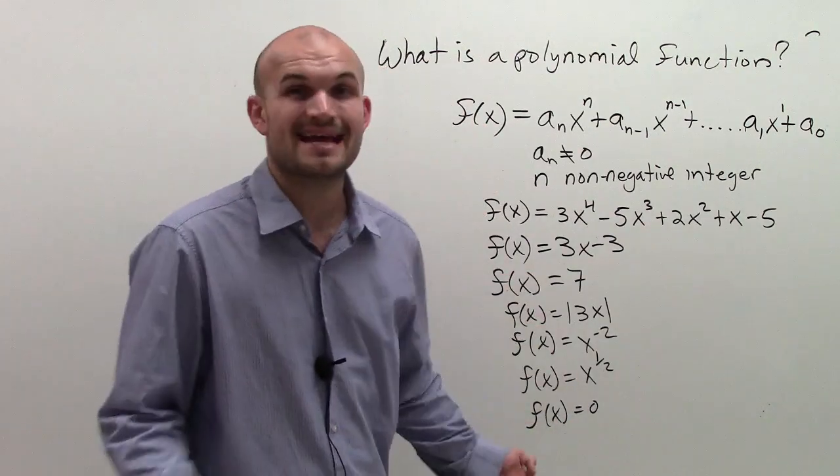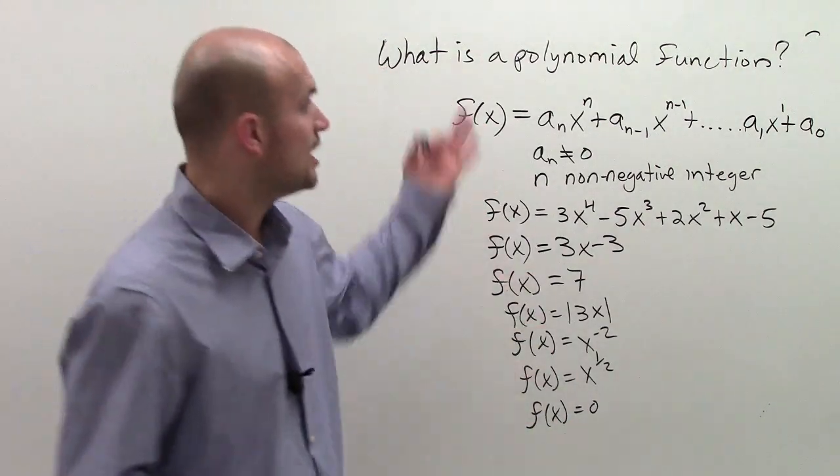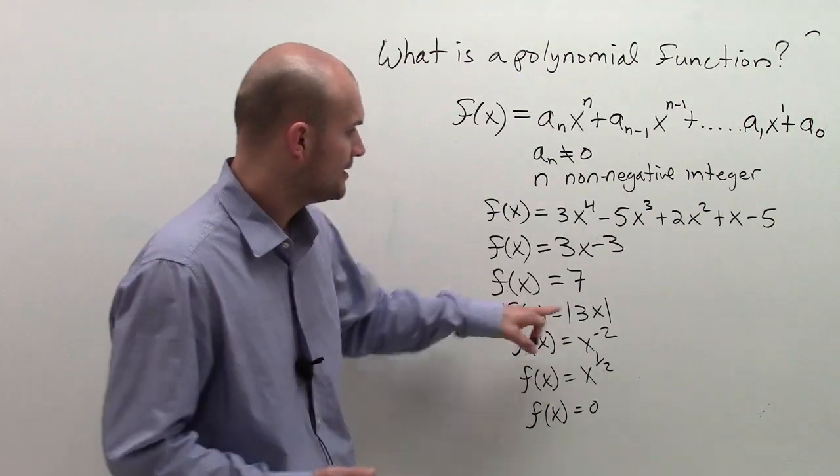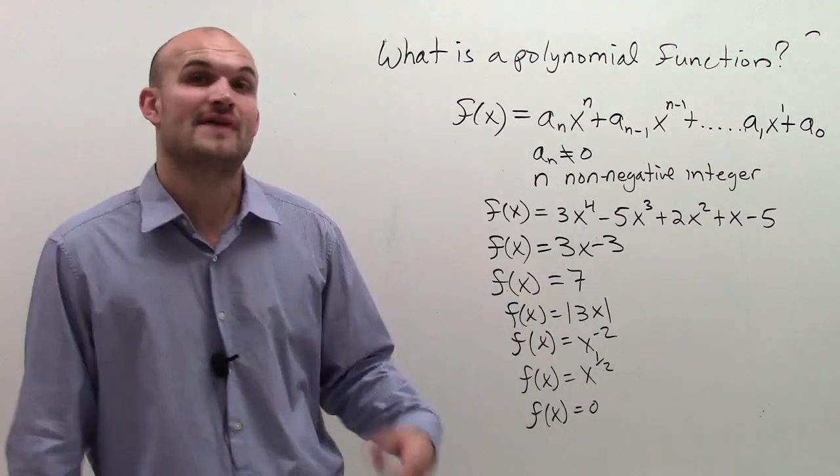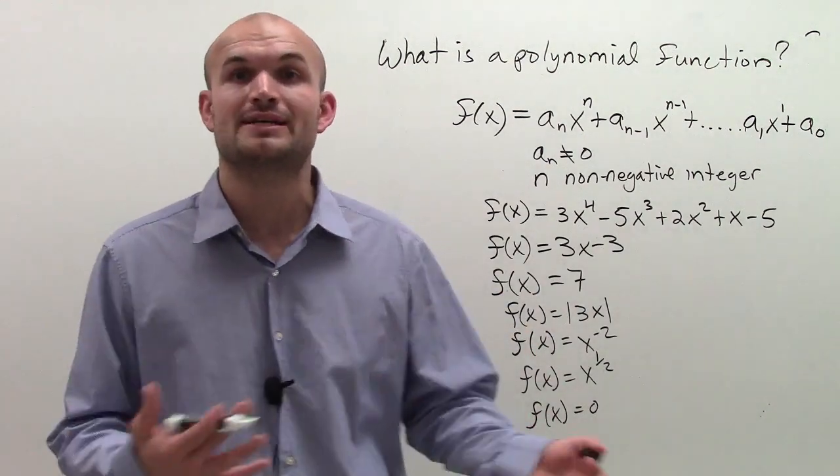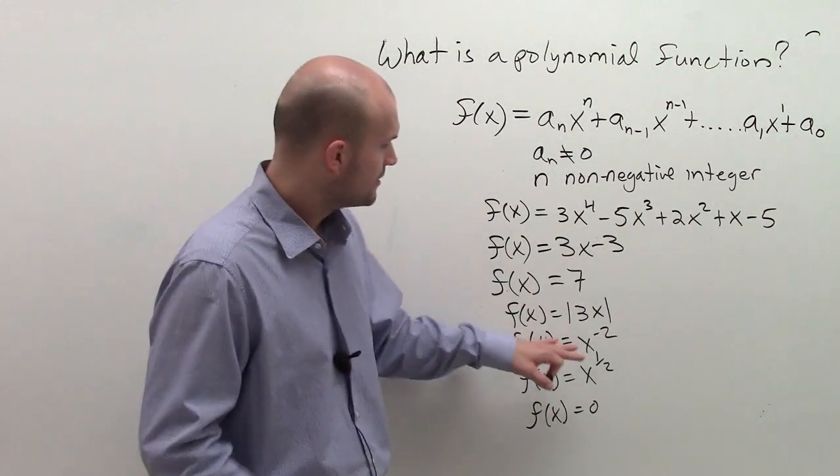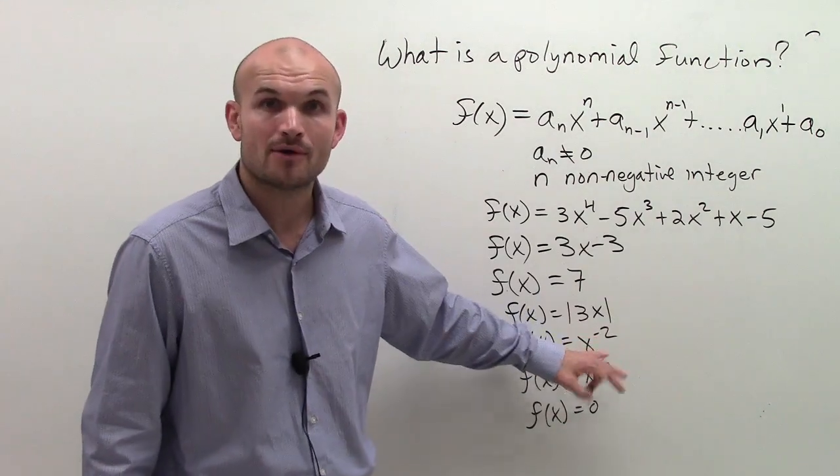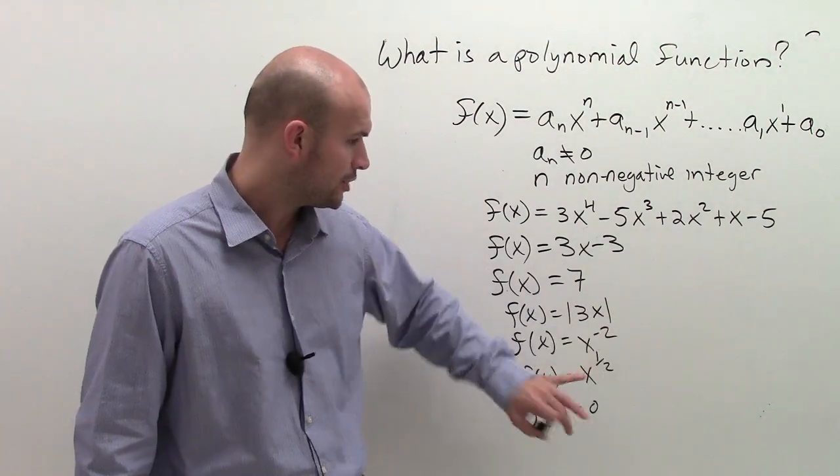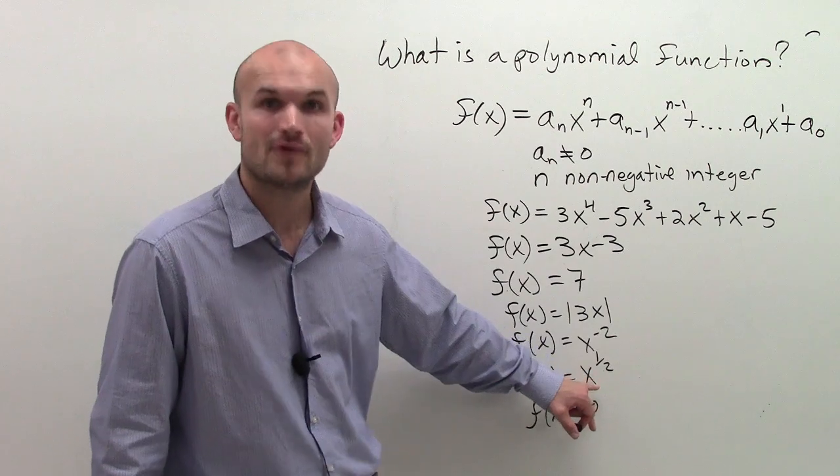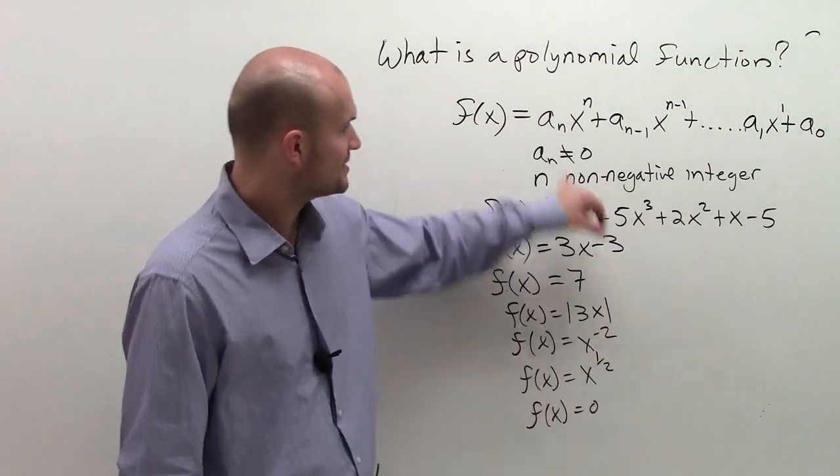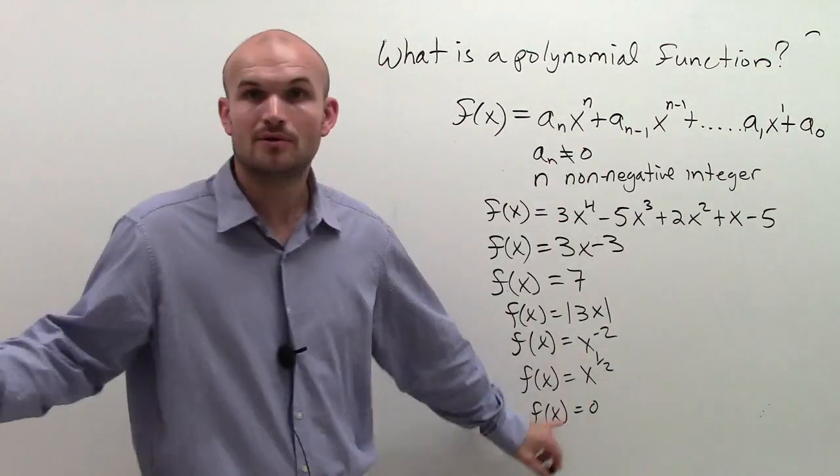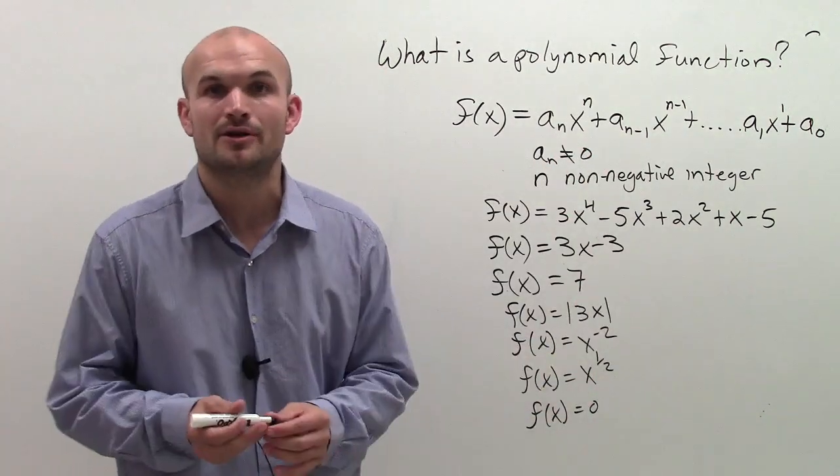So here are four examples, or non-examples, of polynomial functions. And we're actually going to, it's easier probably to explain why an absolute value is not a polynomial function once we get to the graphing part, which I will do. This has a negative power, so it's not going to be a polynomial function. This has a rational power, so it's not going to be a polynomial function. And then obviously this one says a_n cannot equal 0. Well, if you just have 0 there, it's not going to be a polynomial function.